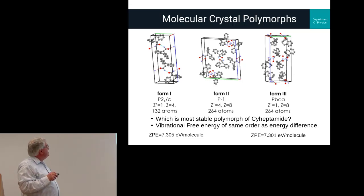Here's an example of one we've been working on, which is cyheptamide. There are three crystalline polymorphs here. It's a molecular organic crystal, so the molecules are identical. There's no real significant conformation change, but the hydrogen bonding does change between the polymorphs. These are very large crystal structures. The smallest one has 132 atoms, the others have 264 atoms.